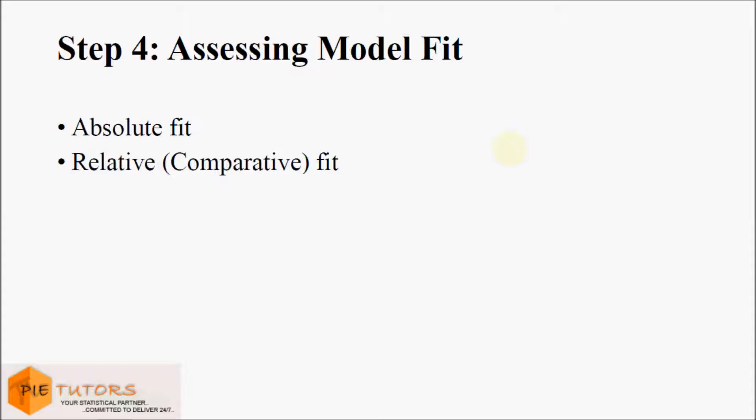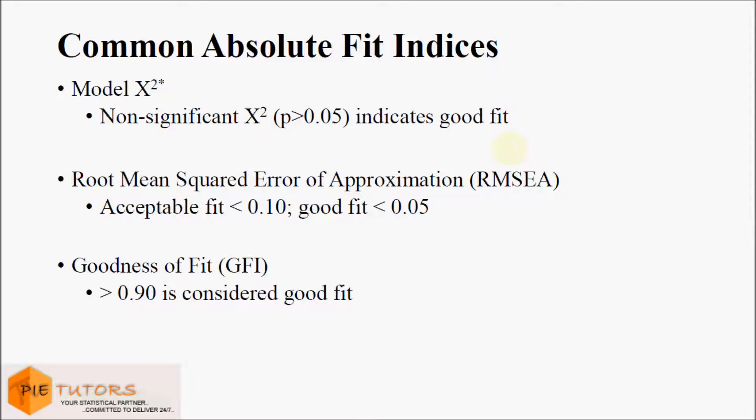Examining fit indices is very important in SEM analysis and is useful in testing certain types of hypotheses, especially when comparing alternate models. Looking at the important types of absolute fit indices — the chi-square value looks at the hypothesis that the observed and implied covariance matrices are equal. We require the significance value to be greater than 0.05. A non-significant chi-square value indicates very little difference between the observed and the implied covariance matrix.